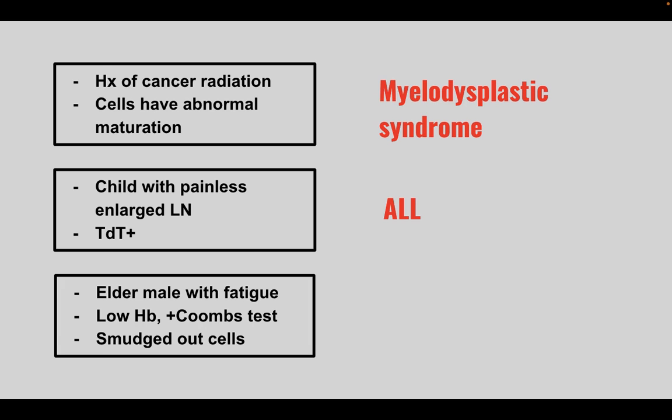Next is an elderly male with fatigue, low hemoglobin, a positive Coombs test, and smudged cells on histology. This is CLL, also called SLL.